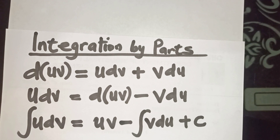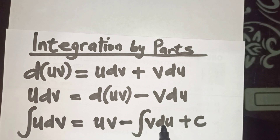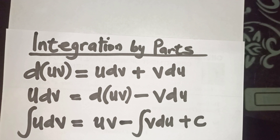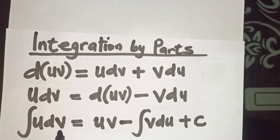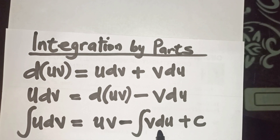This formula expresses one integral — the integral of u·dv — in terms of a second integral, the integral of v·du. A proper choice of u and v will lead to a simpler second integral that we may evaluate easily. There are rules for choosing u and dv: the part selected as dv must be readily integrable, and the integral of v·du must not be more complex than the integral of u·dv.